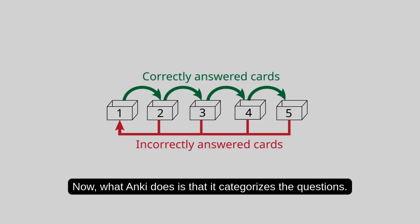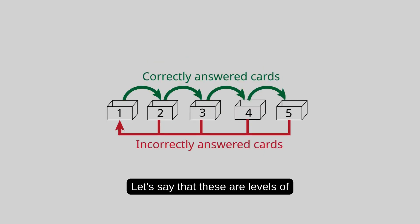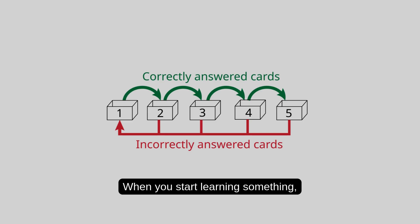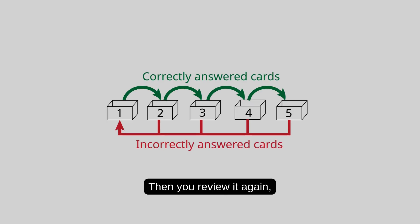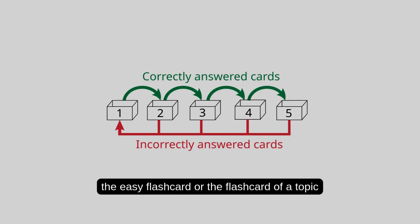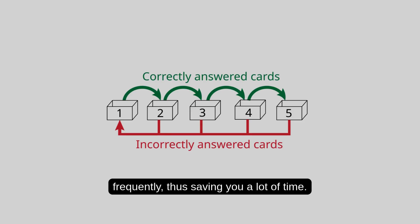What Anki does is categorize the questions into levels of mastery — levels one through five. When you start learning something it's on level one. You review it again and again and it becomes easier. The easy flashcard, or the flashcard of a topic you already understood, will not pop up so frequently. That saves you a lot of time.